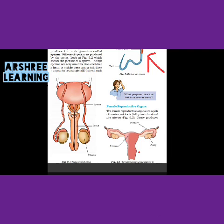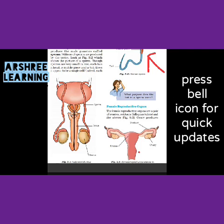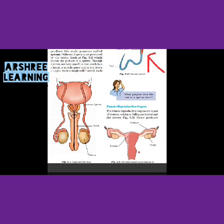The ovaries produce reproductive cells. The key difference is that the male produces millions of sperms at a time, whereas the female ovaries produce one single egg. This egg is called the ovum, and it is fertilized to form a baby.